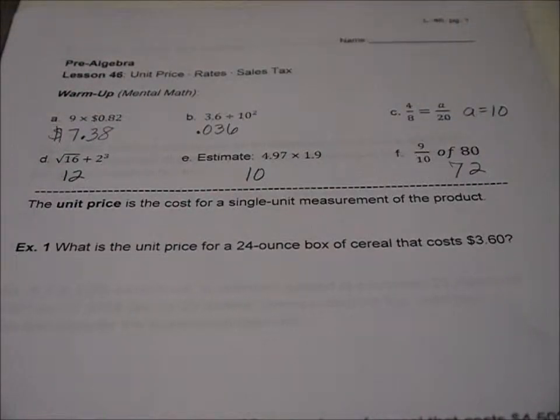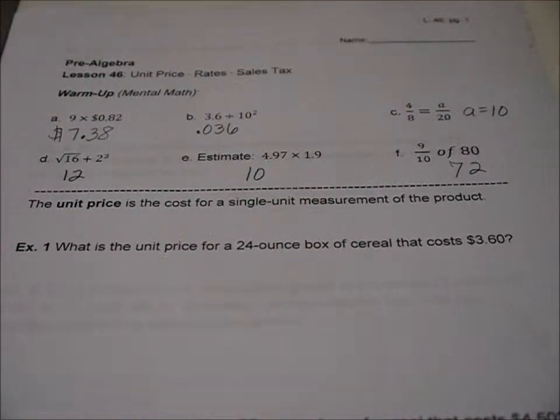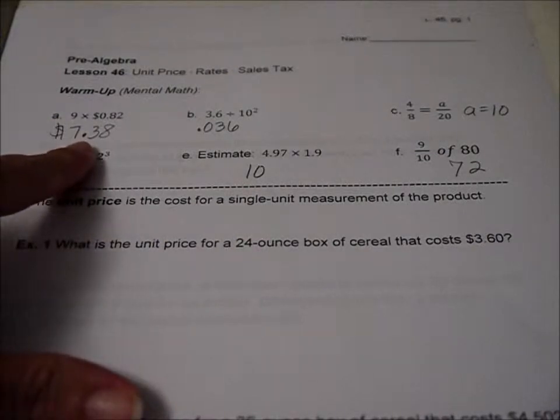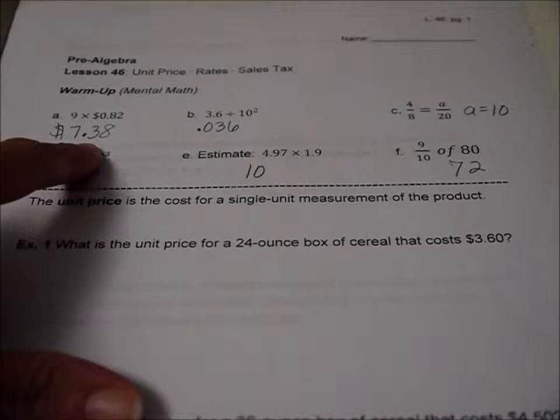Well there you are with the warm-up answers. How I did this was 9 times 80, which was $7.20, plus 2 times 9, which is 18, so I did $7.20 plus 18 cents, so 20 plus 18 is 38.